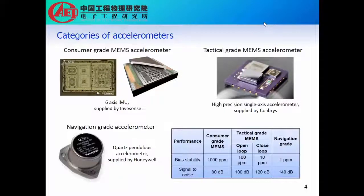First of all, introduction. MEMS accelerometers are used in a wide range of applications, and they can be classified in several different categories, including consumer grade, tactical grade, and navigation grade. Consumer-grade MEMS accelerometers are now using CMOS plus MEMS technologies, and they are widely used in consumer electronics such as smartphones and automotives.